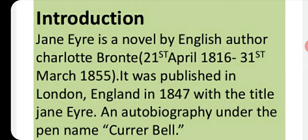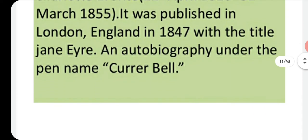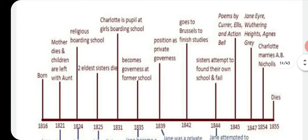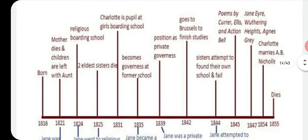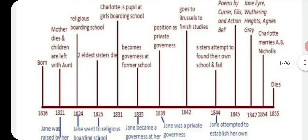Jane Eyre is a novel by English author Charlotte Brontë, born 21st April 1816 and died 31st March 1855. It was published in London in 1847 with the full title Jane Eyre: An Autobiography, under the pen name Currer Bell. The timeline of Brontë's life closely parallels the life of Jane Eyre in the novel.